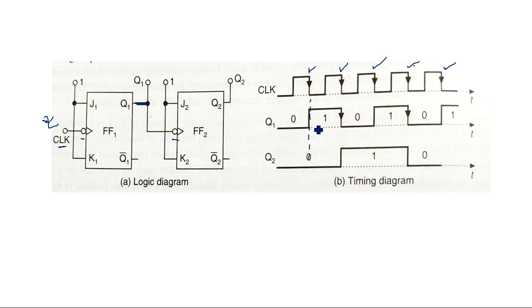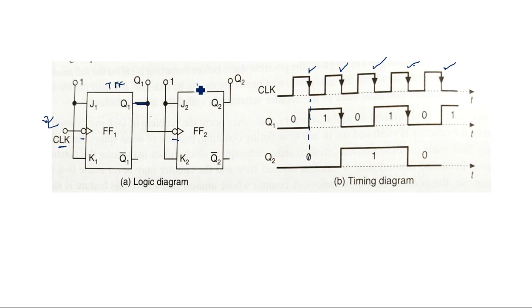Q1 was previously 0. Now, with the falling edge, a 0 to 1 transition occurs in the JK flip-flop when the clock signal has a negative edge. Again, for one more negative edge, the transition changes from 1 to 0, then again 0 to 1. So every time the output toggles: 1, 0, 1, 0 — toggling state — because J and K are connected to 1. We can say it is a T flip-flop with T equal to 1, nothing but a toggle flip-flop.